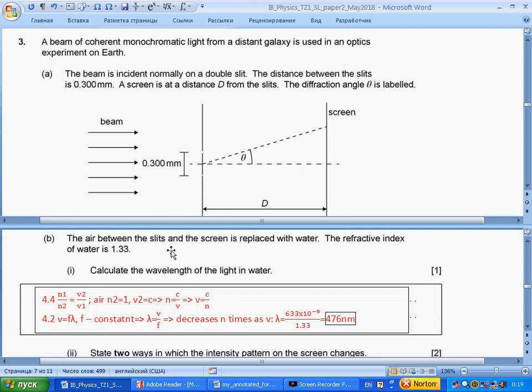The air between the slits and the screen is replaced with water. The refractive index of water is given. Calculate the wavelength of light in water. Refractive index tells us that light slows down. You can use ratio from 4.4 for refractive index and inverse ratio for speed. For air, refractive index is 1, speed is c, so in material speed is n times less. From wave equation section 4.2, wavelength equals velocity by frequency. Frequency doesn't change. Velocity decreases n times, so we divide by n and we get new value.